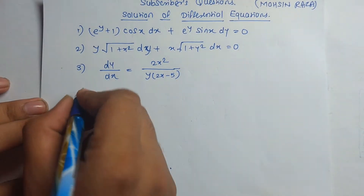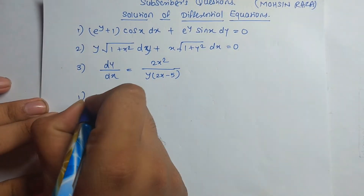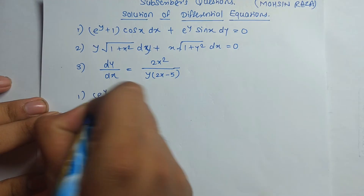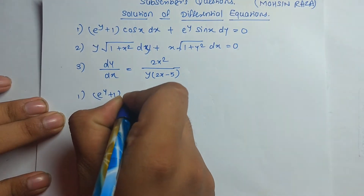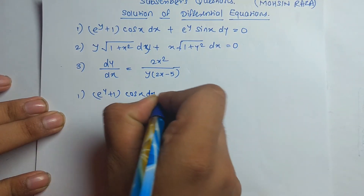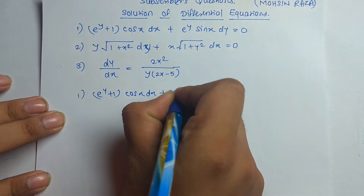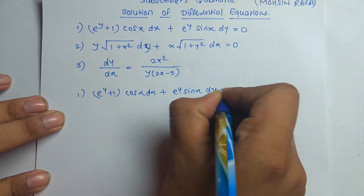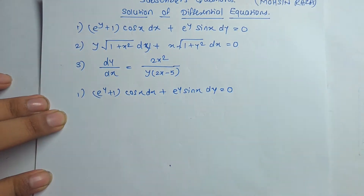The first question is: (e^y + 1)cos(x)dx + e^y·sin(x)dy = 0.